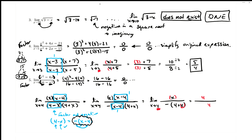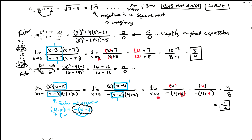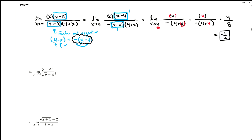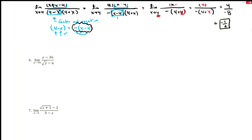Plugging in 4: numerator is 4, denominator is -(4 + 4) = -8. So we get 4 divided by -8, which simplifies to -1/2. The negative is usually moved to the front. So the limit is -1/2. That's how we factor to simplify these rational function limit problems. If we get zero over zero when we first plug in, it's usually a factoring problem. Thanks for watching!